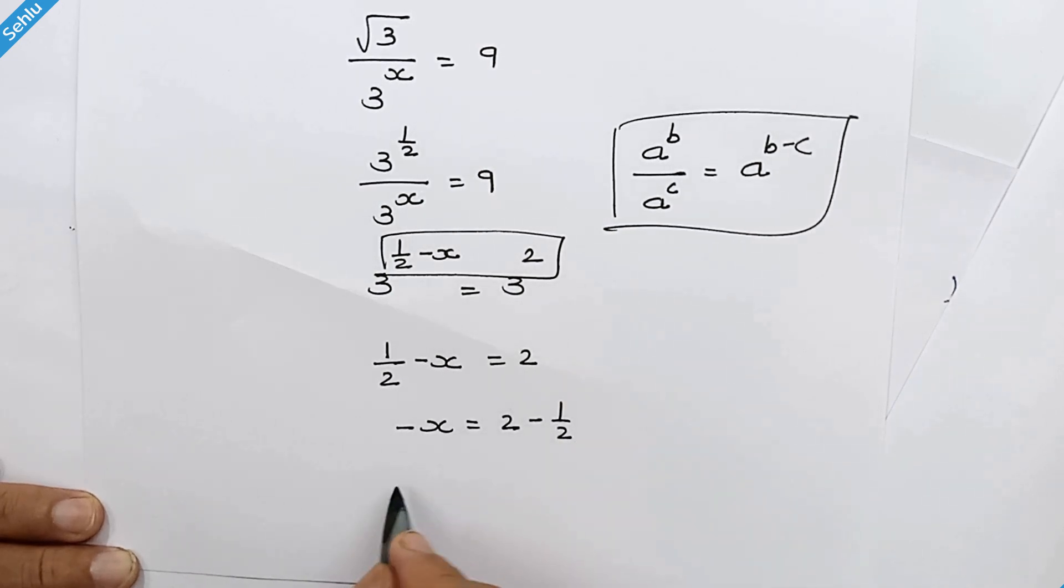Taking LCM here. So it will be negative x is equal to 2 times 2 over 2 minus 1 over 2. So negative x is equal to 4 over 2 minus 1 over 2.